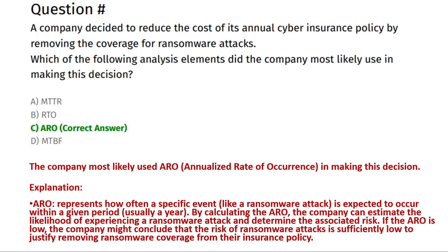The correct answer is Option C: ARO — annualized rate of occurrence. The ARO represents how often a specific event like a ransomware attack is expected to occur within a given period, usually a year. By calculating the ARO, the company can estimate the likelihood of experiencing a ransomware attack. If the ARO is low, the company might conclude that the risk is sufficiently low to justify removing ransomware coverage from their insurance policy.